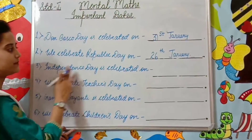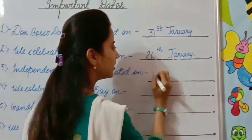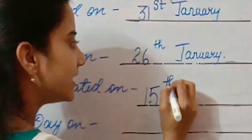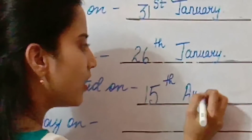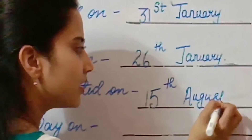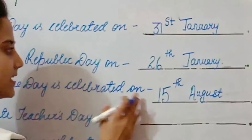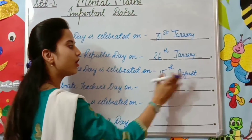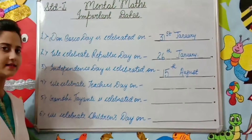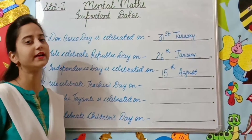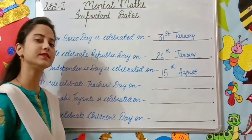Independence Day is celebrated on 15th of August, as India got independent on this day.